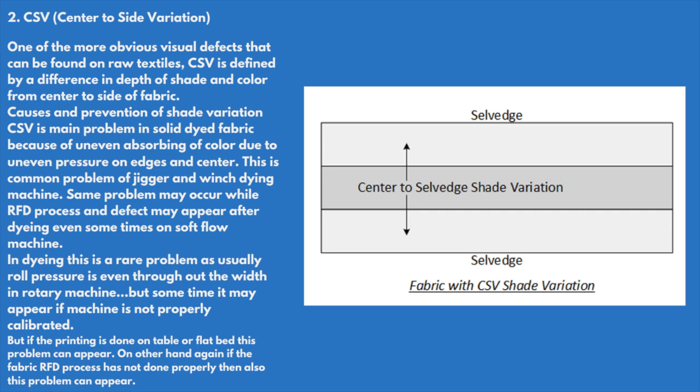CSV — Center to Side Variation: one of the more obvious visual defects that can be found on raw textiles. CSV is defined by a difference in depth of shade and color from center to side of fabric. CSV is a main problem in solid dyed fabric because of uneven absorbing of color due to uneven pressure on the edge and center.